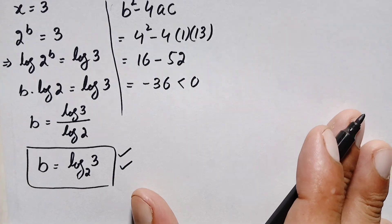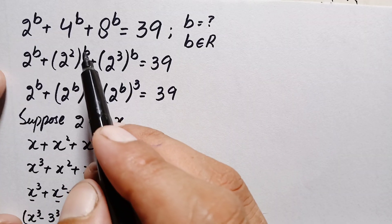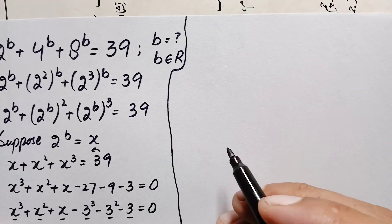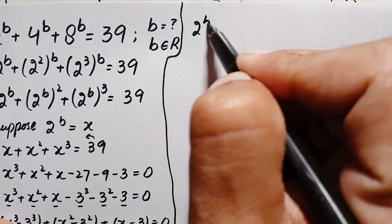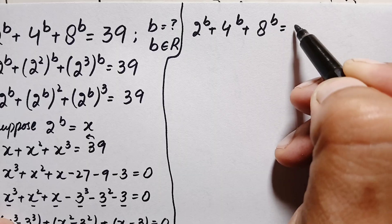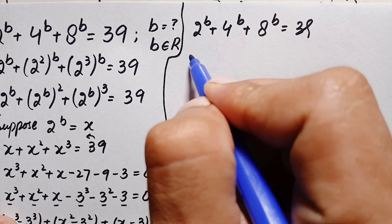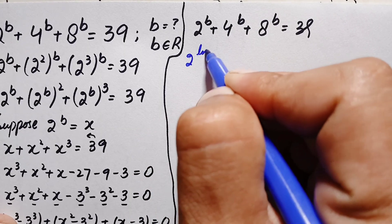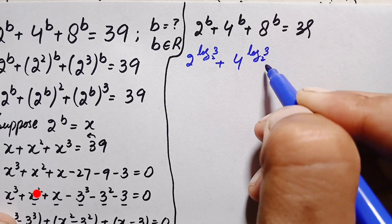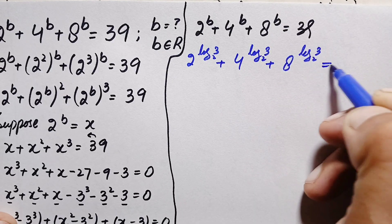Therefore, the only real value is b equals log base 2 of 3. To verify, we substitute this value back into the original problem: 2 raised to power b plus 4 raised to power b plus 8 raised to power b equals 39, replacing b with log base 2 of 3.